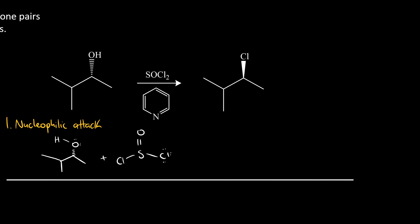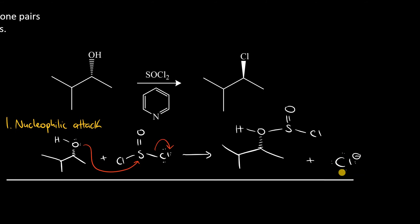The electron-rich oxygen attacks the sulfur, causing the expulsion of one of the chlorine leaving groups. Electrons flow from the OH to the sulfur, and one leaving group is expelled. The result is we form a chloride anion and a charged intermediate that is one step from becoming a sulfur-based ester.